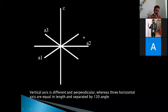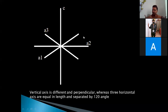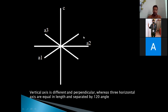The remaining three horizontal axes are equal in length and are separated by an angle of 120 degrees. Since the three horizontal axes are equal in length, they are referred to as A1, A2, and A3, whereas the vertical axis, which is different in length, is referred to as C. The C axis is perpendicular to the horizontal system, while each axis in the horizontal system is separated by 120 degrees. This is a different kind of axial arrangement where four axes are represented.